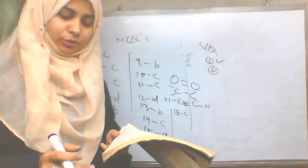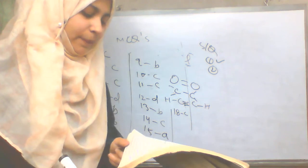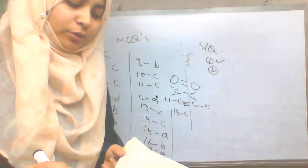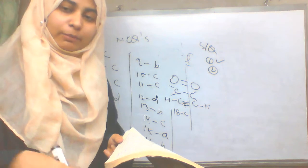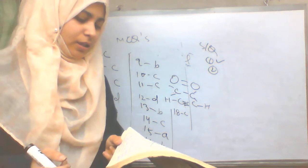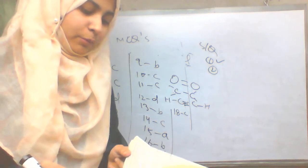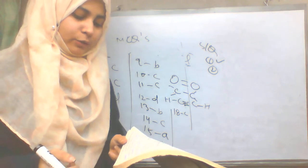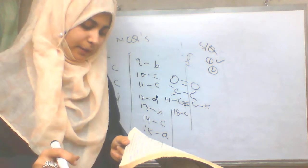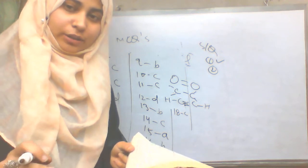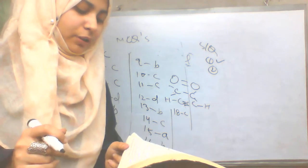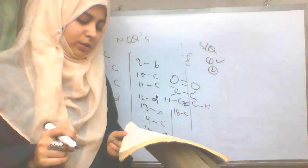Ionic compounds conduct electricity in solution or molten form because the ions are free to move. What type of covalent bond is formed in a nitrogen molecule? It is called a triple covalent bond. What is the difference between lone pairs and bond pairs of electrons?